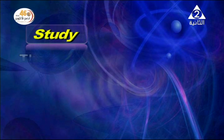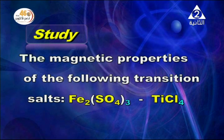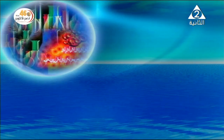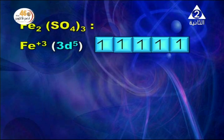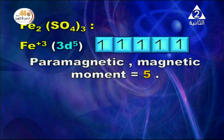Next example: Study the magnetic properties of Fe2(SO4)3 and TiCl4. Iron(3+) has electronic configuration [Ar] 3d5 (losing 4s2 and one 3d electron from iron's 3d6 configuration), giving 5 unpaired electrons — so it is paramagnetic with magnetic moment equal to 5. Titanium (atomic number 22) has configuration [Ar] 4s2 3d2; Ti4+ loses all 4 electrons giving an empty 3d sub-level, so it is diamagnetic with magnetic moment equal to 0.